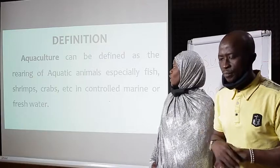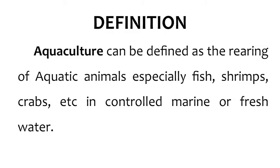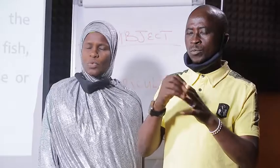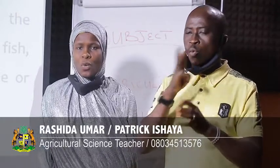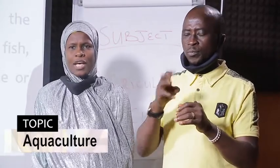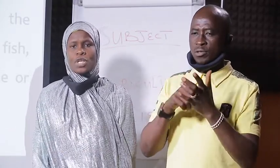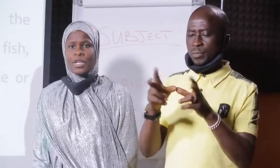Now let's look at the definition of aquaculture. Aquaculture can be defined as the rearing of aquatic animals, especially fish, shrimp, crab, etc., in controlled marine or fresh water. When we say 'aqua' here, we are referring to water. So aquaculture simply means the rearing of aquatic animals, and these aquatic animals include fish farming, shrimp farming, crab farming, etc.